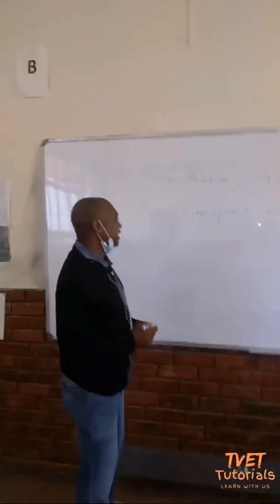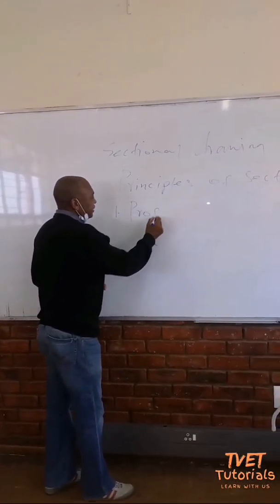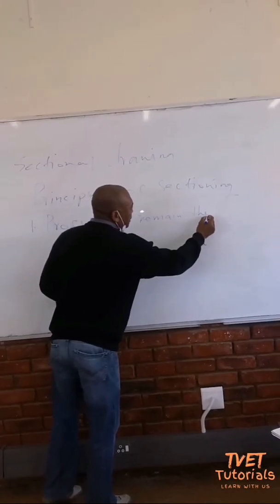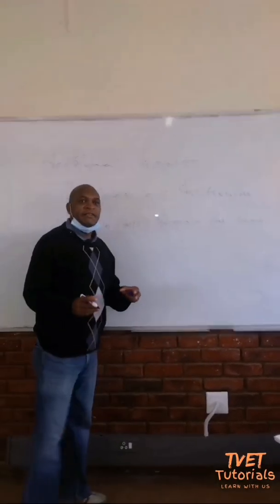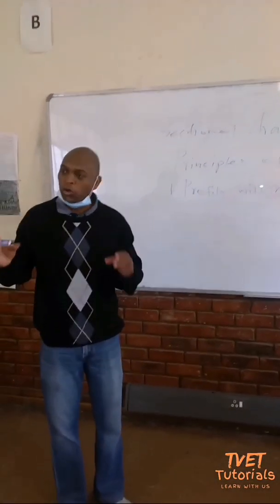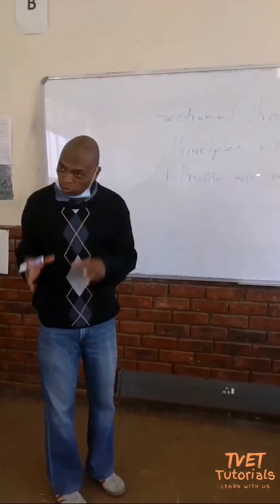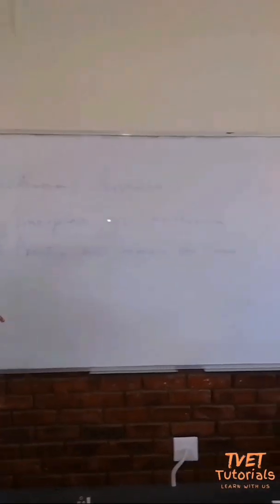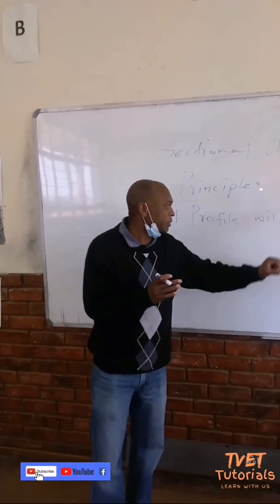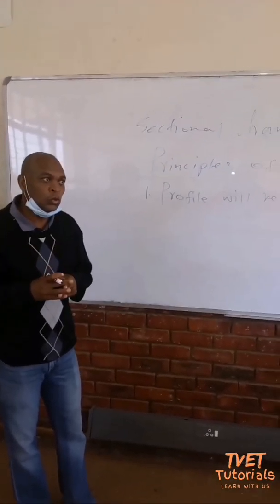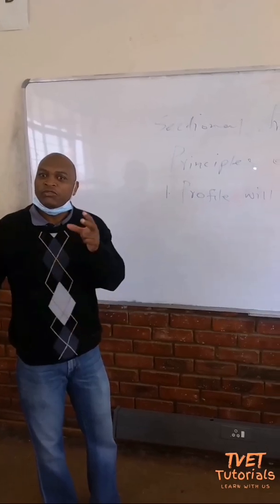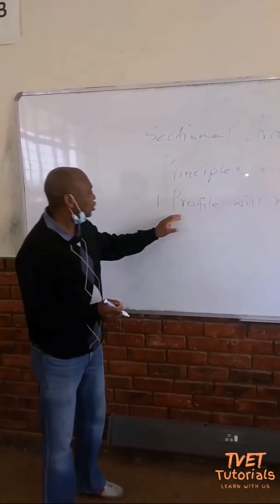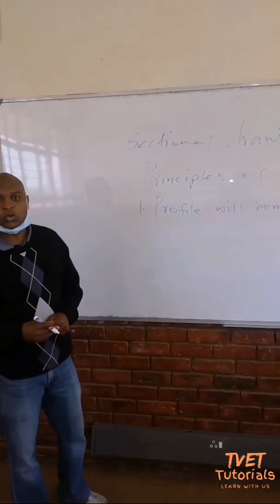The first rule states that the profile will remain the same. As we encourage you, always when you start with sectioning, start with this rule — it will help you a lot. When we talk about the profile rule, we are going to look at the outside of the drawing. The rule states the profile will remain the same; in similar terms, we are just going to copy the outside of the drawing as given. Always start by copying the outside, then you will be done for rule number one, and we will go to rule number two.